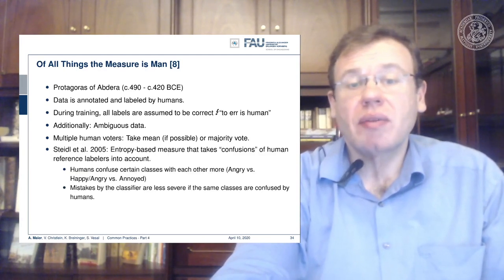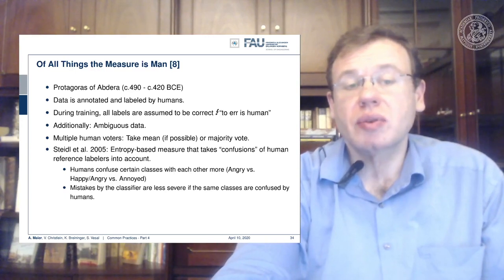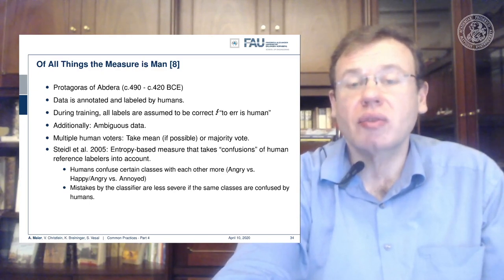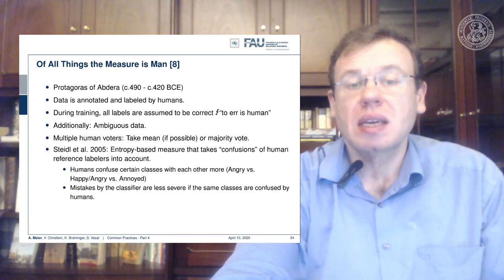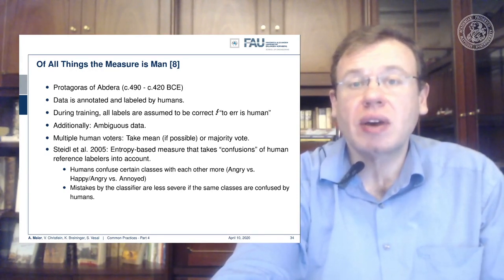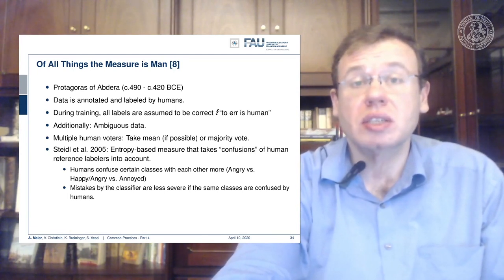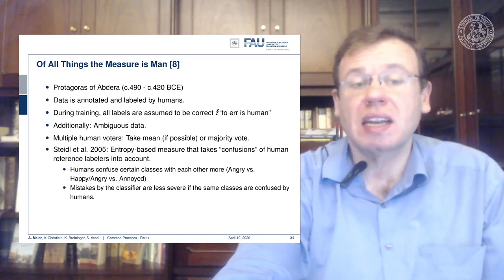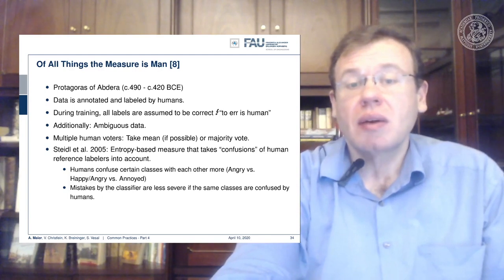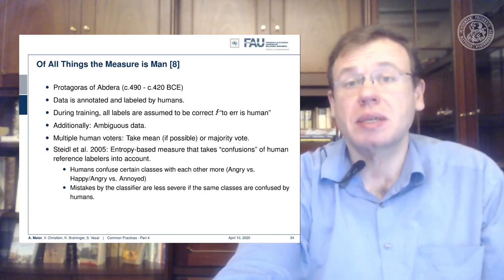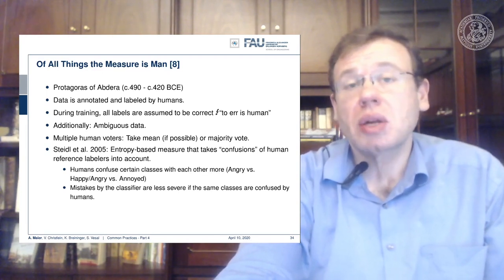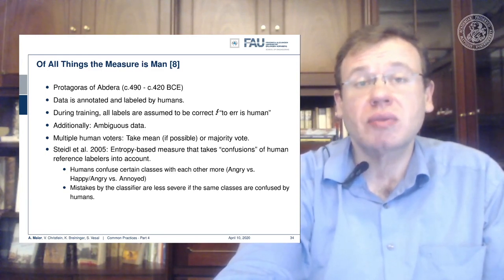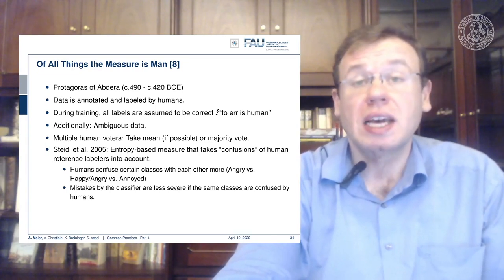There's a very nice paper by Stefan Steidl from 2005 that introduces an entropy-based measure taking into account the confusions of human reference labelers. This is very useful in situations where you have unclear labels. In particular in emotion recognition this is a problem — humans sometimes confuse classes like angry versus annoyed, while they are not very likely to confuse angry versus happy. There are different degrees of happiness, and sometimes it makes it really difficult to differentiate happy from neutral, which is also hard for humans.